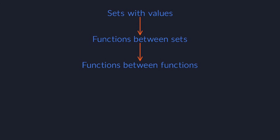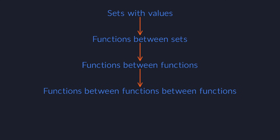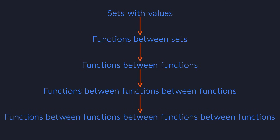Your best guess would probably be to consider arrows between functors. Those are called natural transformations, and they play a huge role in category theory. But they are just the beginning — you can keep going up as long as you want, creating arrows between arrows between arrows. No wonder category theory is so abstract.